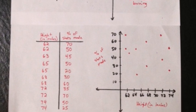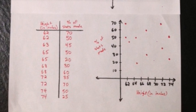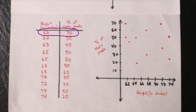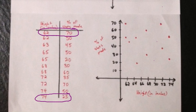Let's look at one more example. In this example, we are comparing the heights of a group of students to the percentage of free throw shots that they made. For example, for this student right here, who is 62 inches tall, he made 70% of his free throw shots. The tallest student, who is 74 inches tall, made 25% of his free throw shots. I've already plotted these points on the coordinate plane, so let's think about the relationship that exists, or if any relationship exists between these two sets of data.